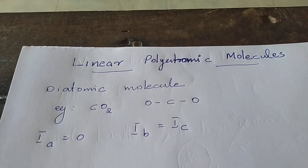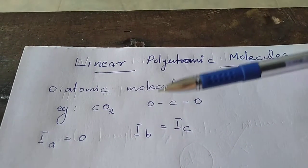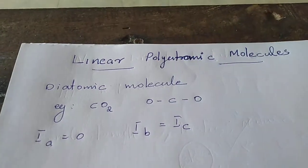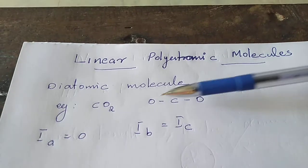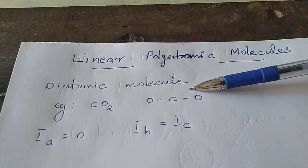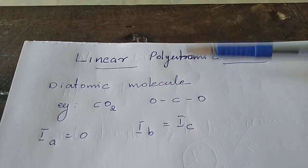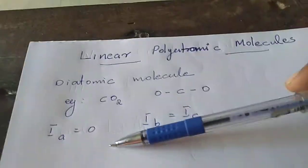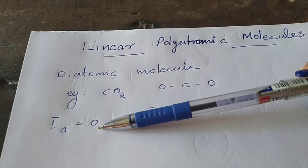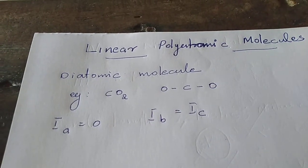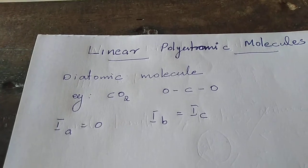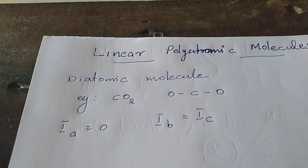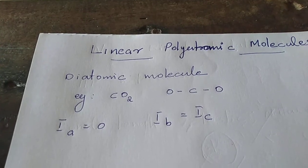Linear polyatomic molecules can be treated similarly to diatomic molecules. The main reason is the moment of inertia: IA equals zero, and IB equals IC, which is the same condition as for diatomic molecules. That is the similarity between linear polyatomic molecules and diatomic molecules.